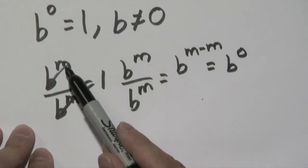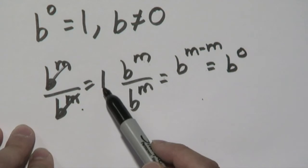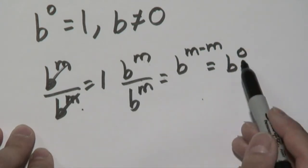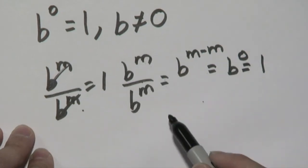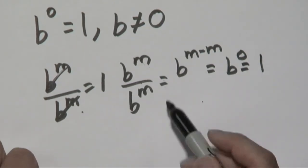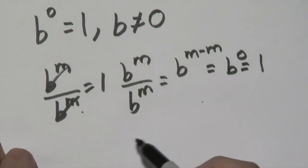But part of the logic here is if you know b to the m over b to the m is going to equal to one, and we know this is equal to this, then b to the zero also has to be one. So what does that tell you? That means anything raised to the zero power, except zero of course, is going to be one.